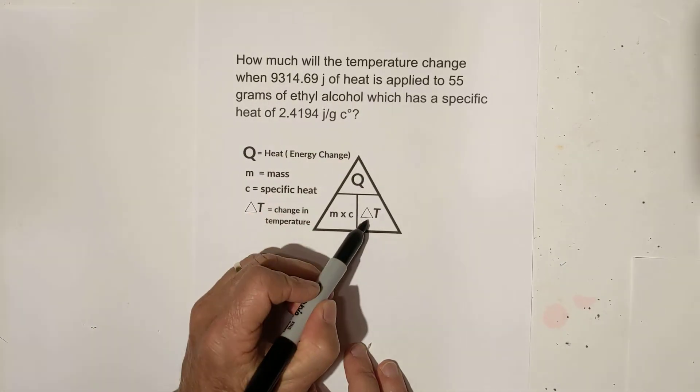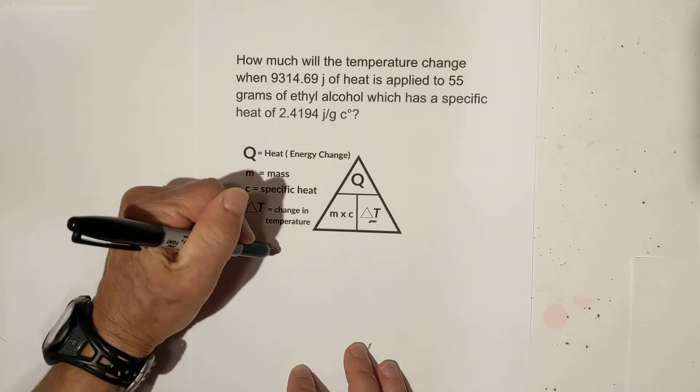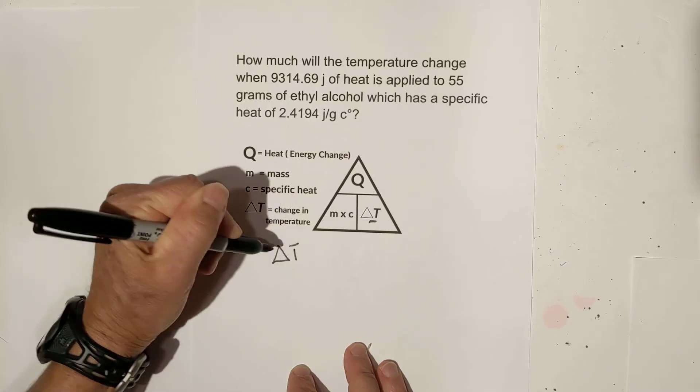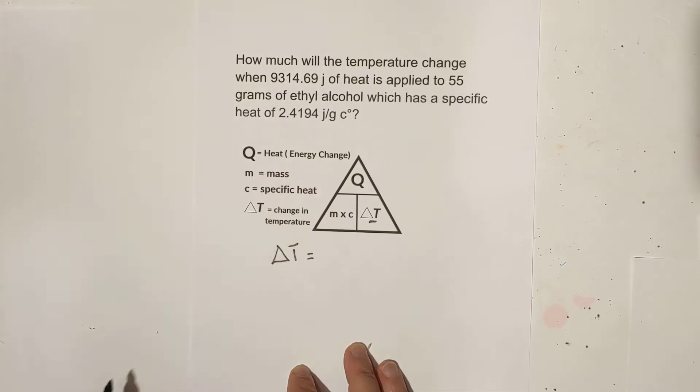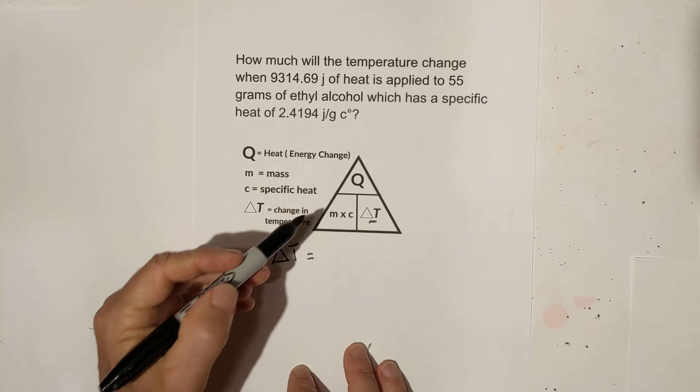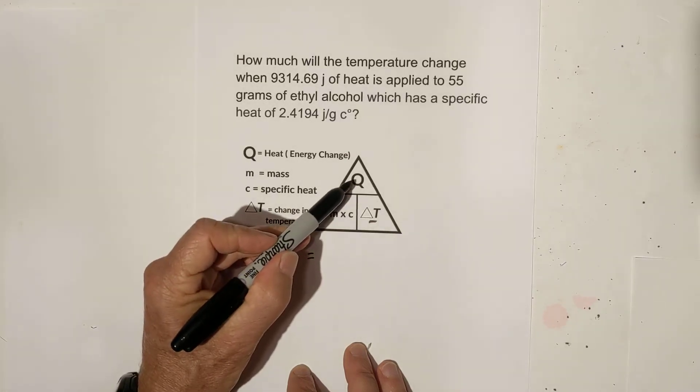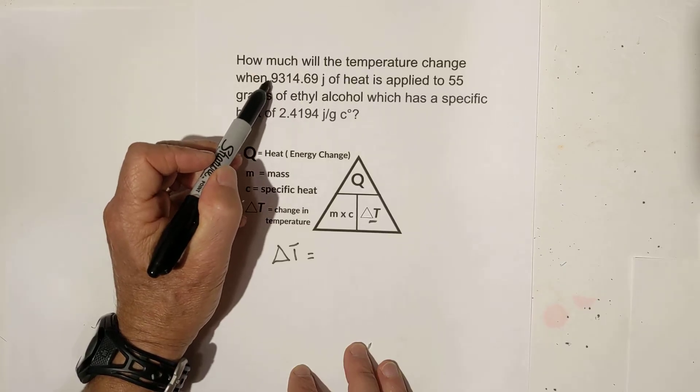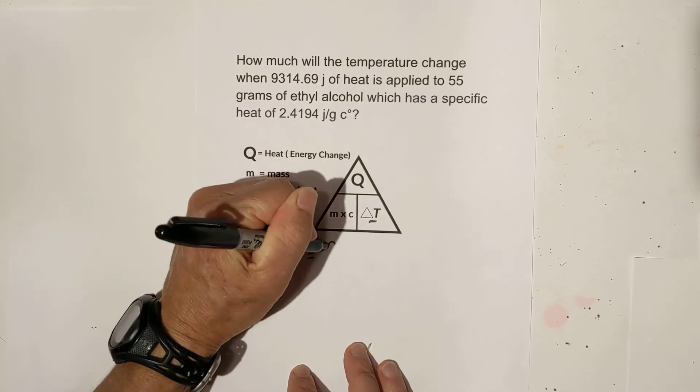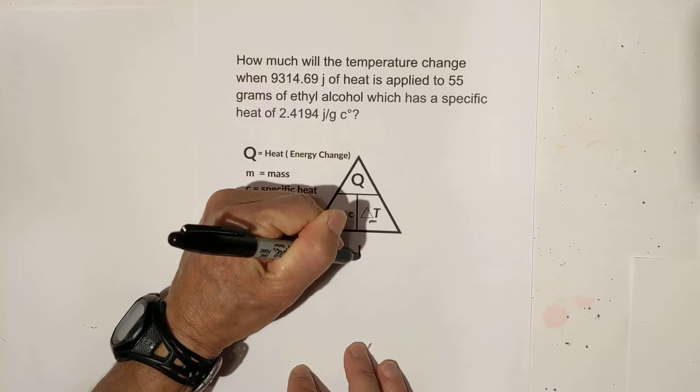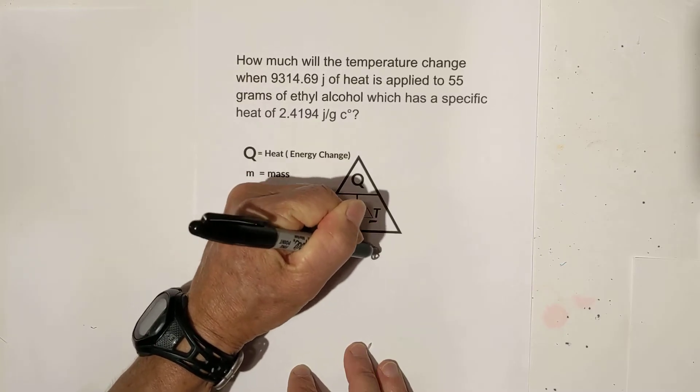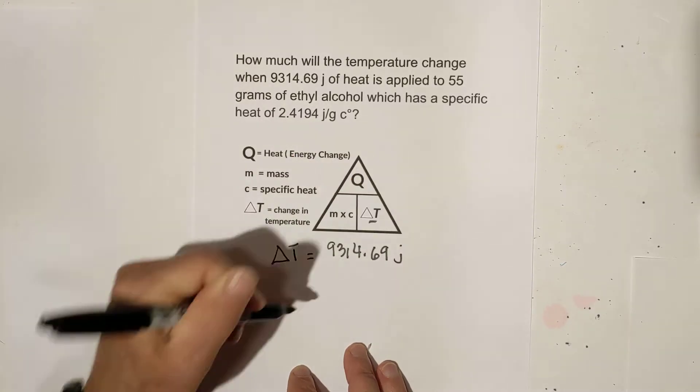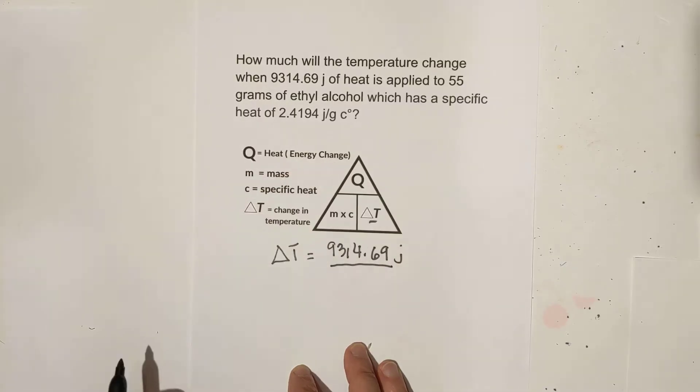We need temperature change which is this. So we're going to go temperature change equals Q, and Q is given right here. So it is 9,314.69. Remember your units, joules.